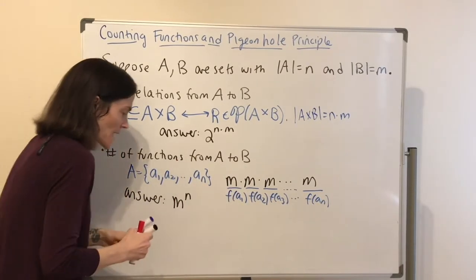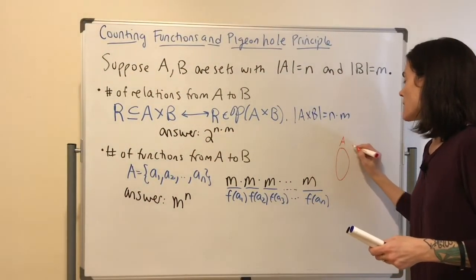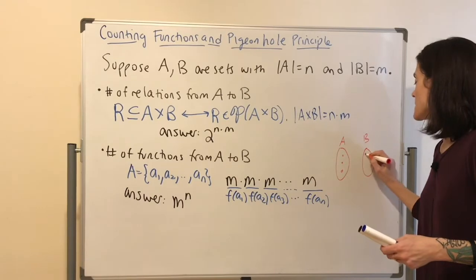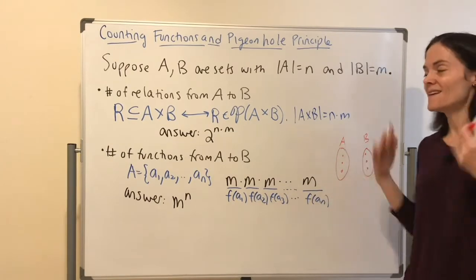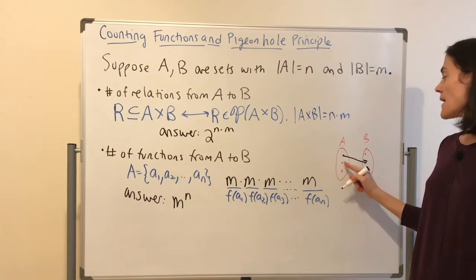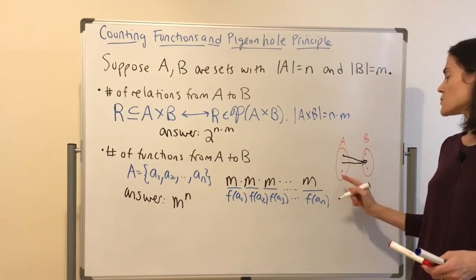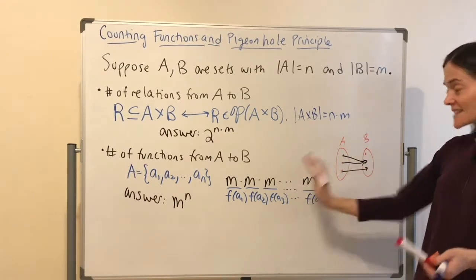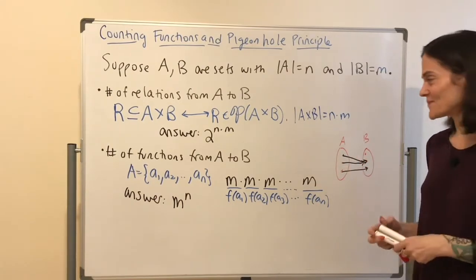To visualize this: if we have A on one side and B on the other, for A1 we have three choices and maybe pick one; for A2 we have another three choices; for A3 we have three choices again. That's how the multiplication rule works, and M to the N is the number of all functions from A to B.